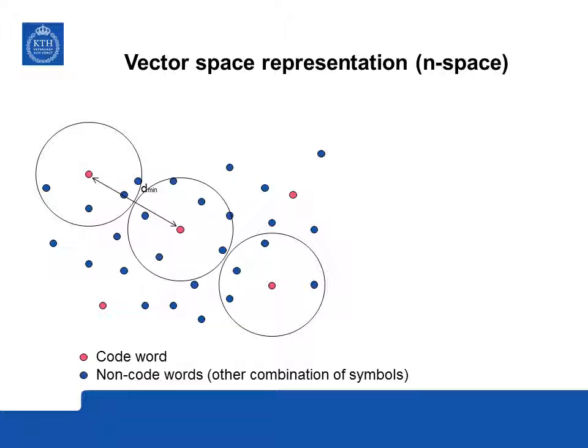Since there are only k information symbols, there are only 2^k possible correct messages, indicated in the graph as red dots. If the receiver receives a word corresponding to a red dot, it assumes this is a correctly received message and forwards it. If a blue dot is received, the receiver assumes a correct message was corrupted by an error, so an error can be detected. The only mistake occurs if enough errors shift the message from one red dot to another red dot.